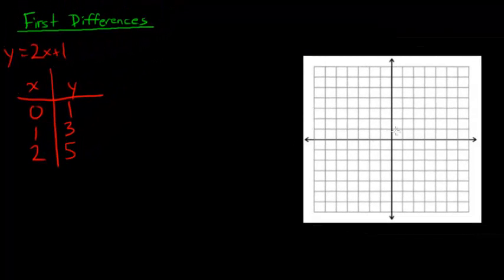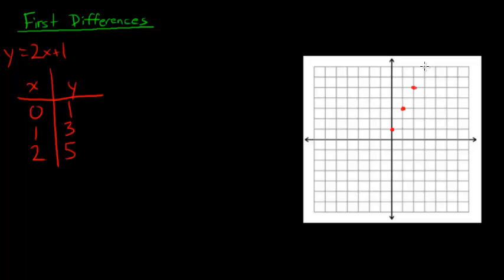And I can graph those points: (0, 1), (1, 3), and (2, 5). Can a straight line be drawn through those? Without even doing it, you can probably tell yes — and of course you can. So is it linear? Yes. That was quite a long process if you actually have to draw the graph.